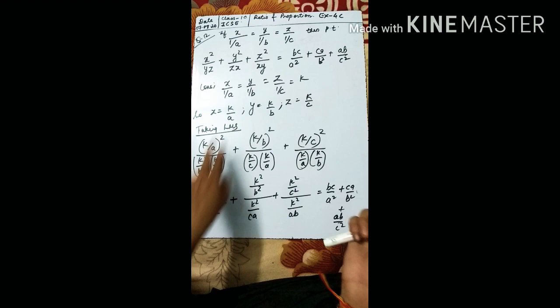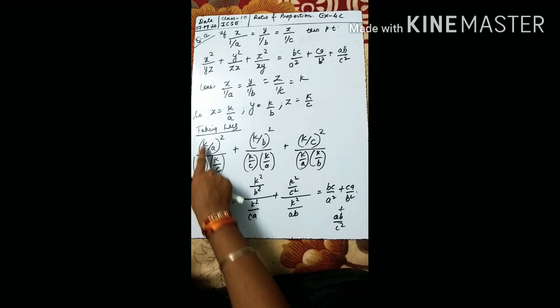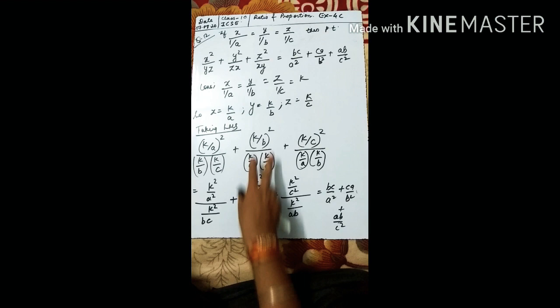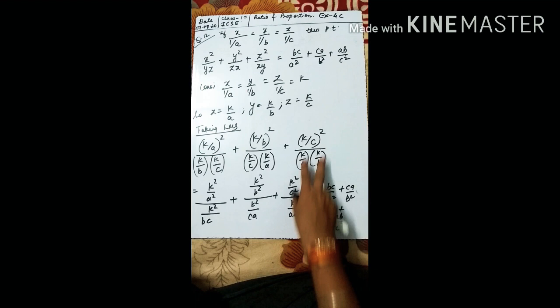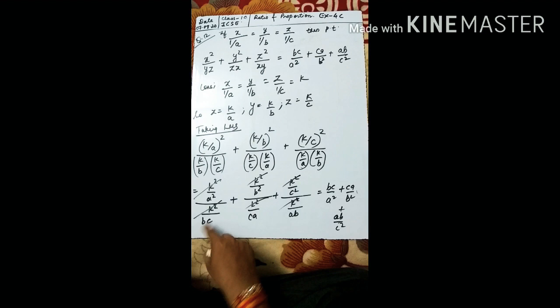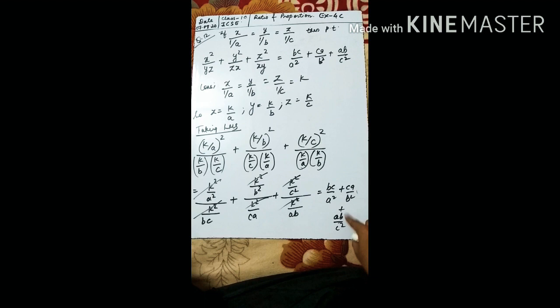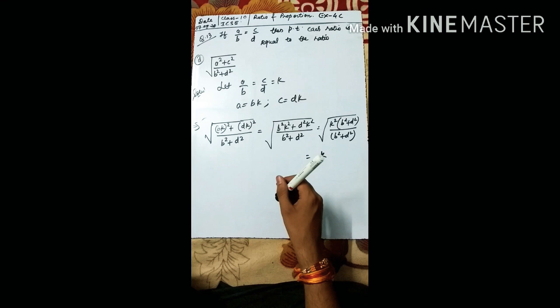After substitution, numerator terms become k²/a², k²/b², k²/c² and denominator terms involve products like bc, ca, ab. The k² in numerator and denominator cancel. We get bc/a² + ca/b² + ab/c², which is the required expression. Hence proved.